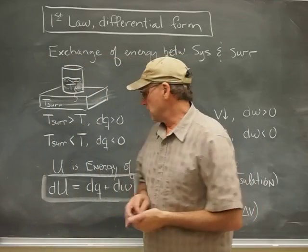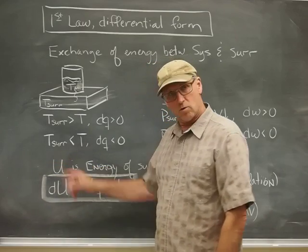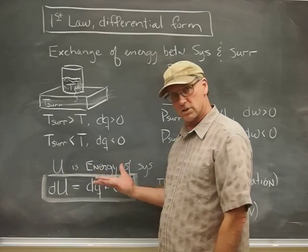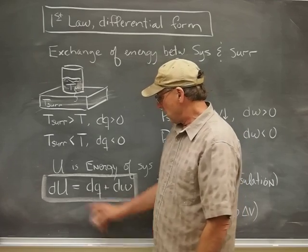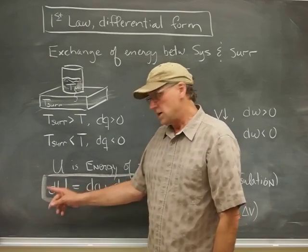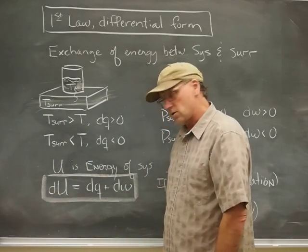Now we get to the other half of this, which is that U is this quantity that we say is just a tally of all the energy in the system. And I'm going to say DU is the change in that energy resulting from some process.